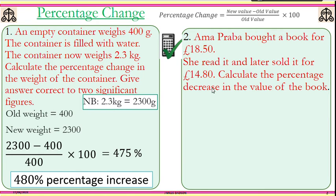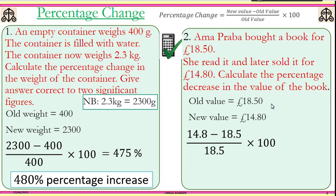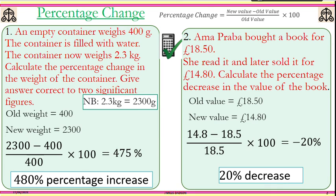So you have the old, which is 18.50, the new, 14.80. Just put it into the formula, work it out, and that is negative 20. The negative signifies a decrease, so the answer is 20 percent decrease. The value or the price of the book has gone down by 20 percent.